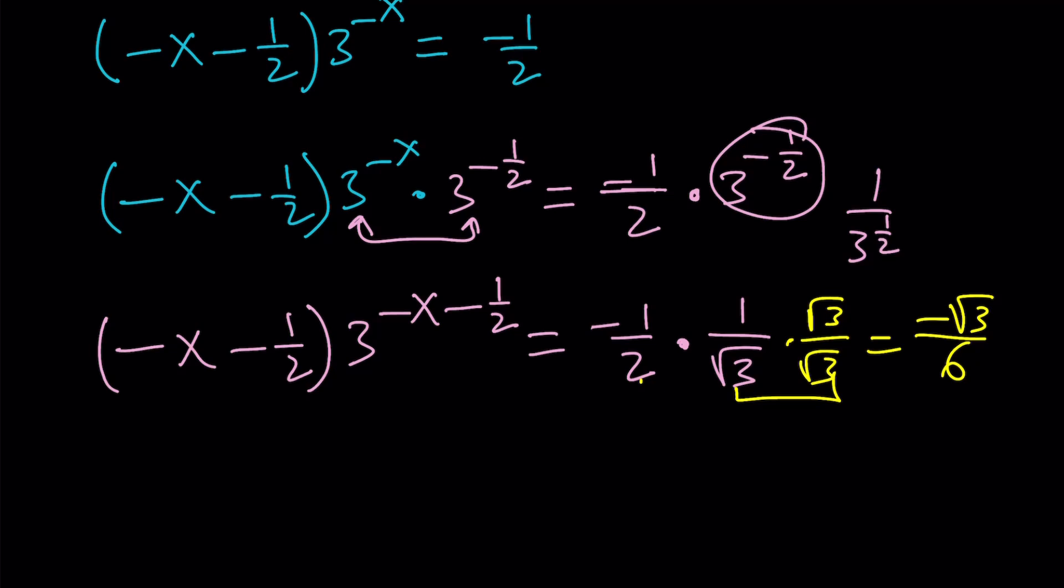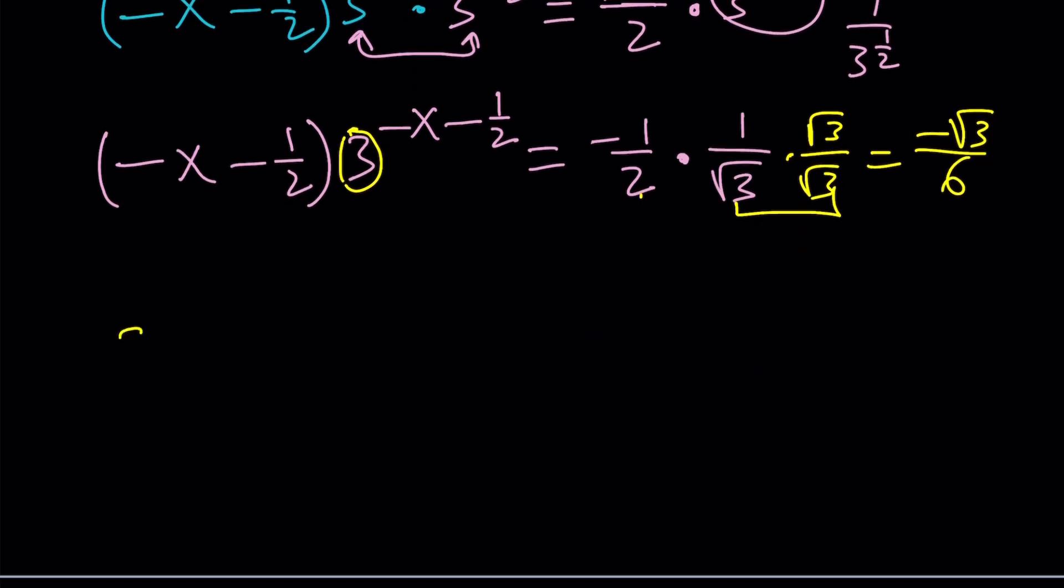We're super close to the result. The only thing we need to change now is to change the base. Change of base formula? No, that's for logarithms. With exponents, we can do it using Euler's formula, or just Euler. Euler's number is e, right? So, we're going to use e here. And obviously, 3 can be written as e to the power ln 3.